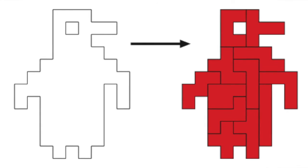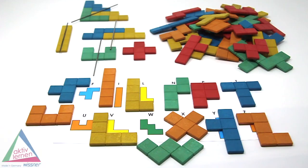Pentominos are very suitable as working material which meets various requirements. The material enables different tasks, allows different solutions, takes into account different working speeds, allows self-control, supports cooperation in small groups, and addresses not only the cognitive but also the motor and emotional level.